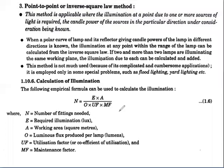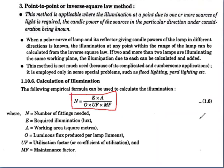From the lumen method we get the formula: the number of fittings needed N = (E × A) / (Φ × UF × MF), where E is the required illumination, A is the working area in square metres, Φ is the luminous flux produced per lamp in lumens, UF is the utilization factor, and MF is the maintenance factor. If we know the required illumination level, working area, luminous flux per lamp, utilization factor, and maintenance factor, we can easily find out the number of fittings needed.